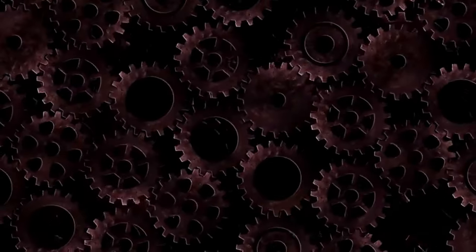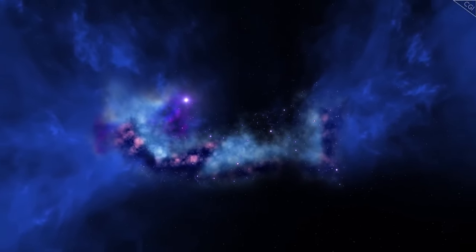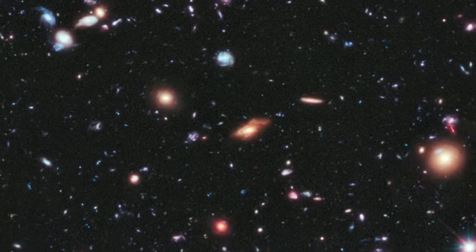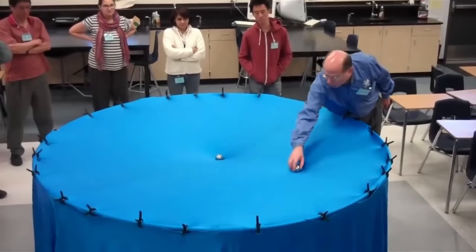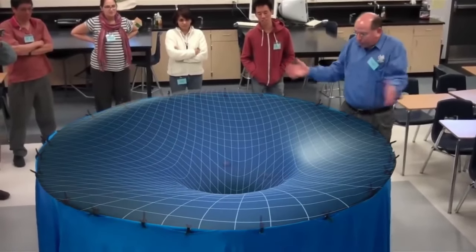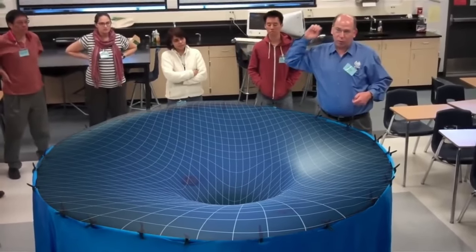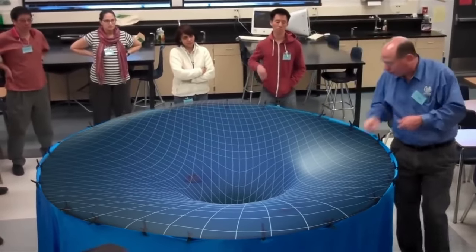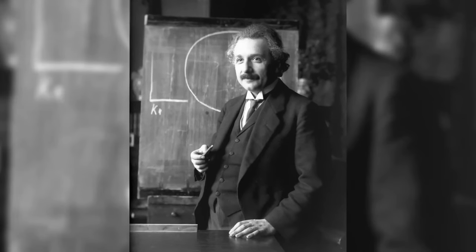However, the James Webb Space Telescope has closely examined these galaxies and found no evidence of such cosmic collisions. If galaxies were crashing into each other, we would expect to see some signs of damage, maybe some disarray or distortion, like a car after a small accident.